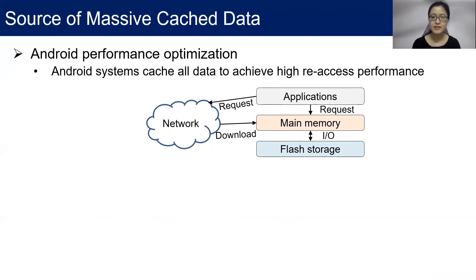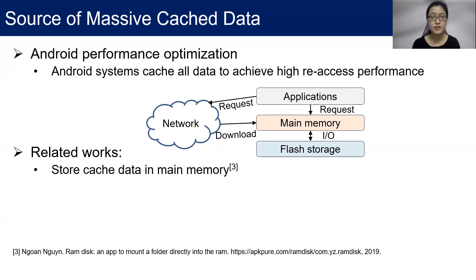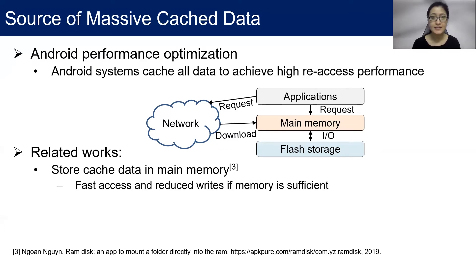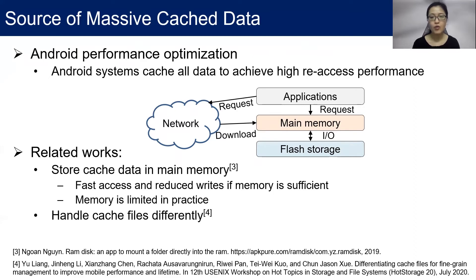Mobile applications usually request a lot of data from the network. To improve real access performance, Android systems cache all this data in memory and then write them back to flash storage. This not only reduces flash storage lifetime, but also degrades I/O performance. To solve this problem, some related works propose to store cache data in memory. This method can speed reuse and also reduce threats to flash storage if memory is sufficient. However, memory is limited in practice.